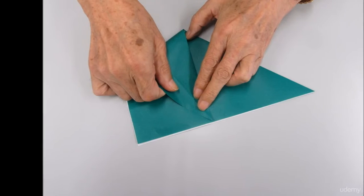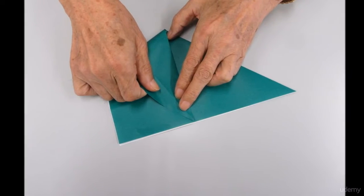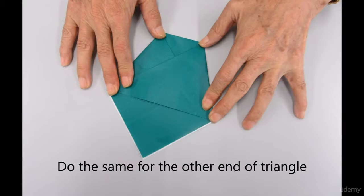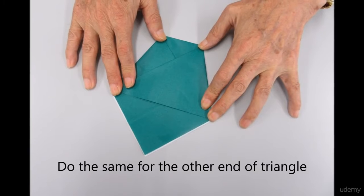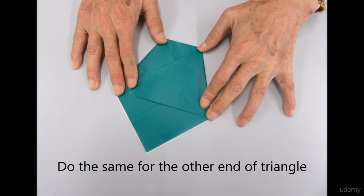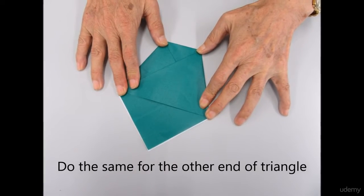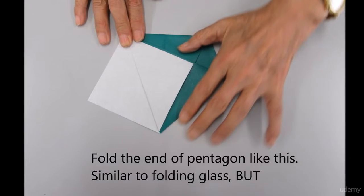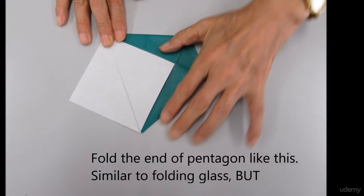And end of triangle to where the line was marked. Okay, do the same for the other end. So this is exactly the same right now for me, a little different for the end of pentagon like this.